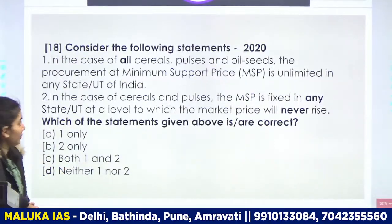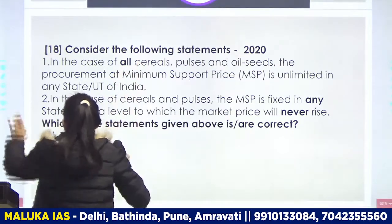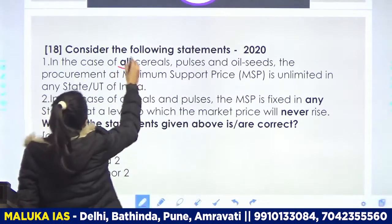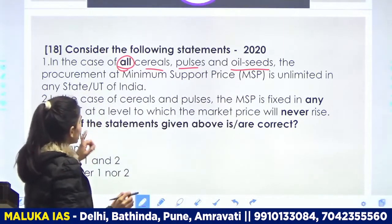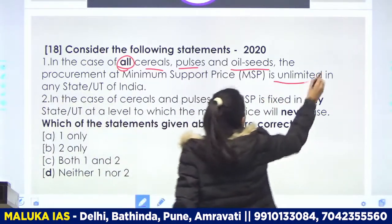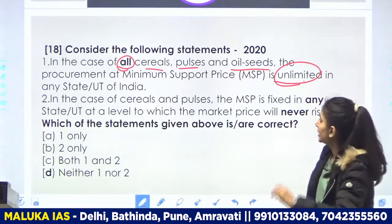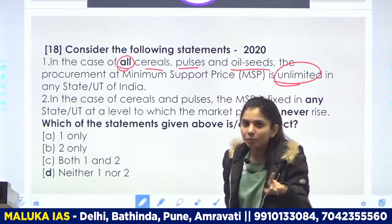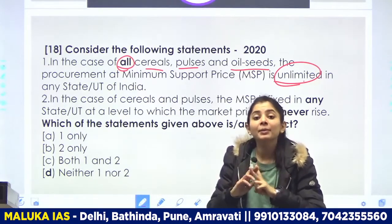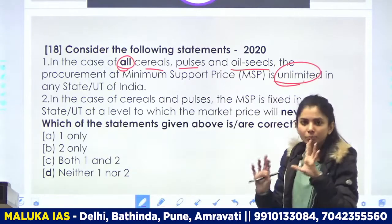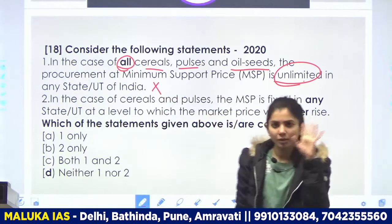Next question: consider the following statements. First statement is saying: in case of all cereals, pulse seeds, and oil seeds, the procurement at MSP is unlimited in any state or union territory of India. Toh pehle yeh bol rahe hain ki saari cereals, pulse seeds, oil seeds ko MSP par procure kiya jaata hai. Doosra — unlimited procure kiya jaata hai. Yeh bahut hi extreme statement hai — 99% chances hain yeh galat hogi.